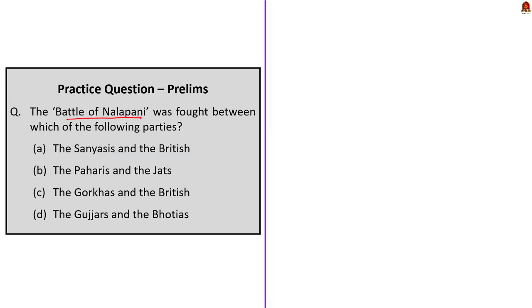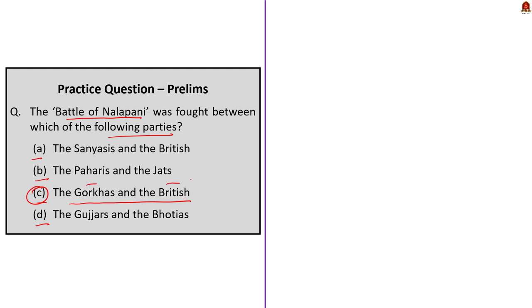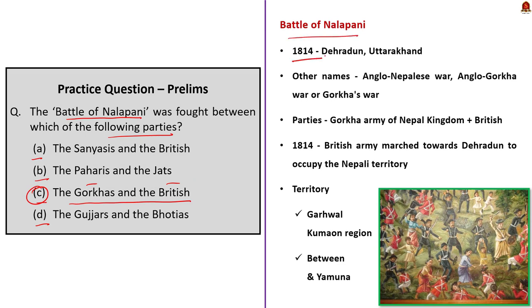The next question is about the Battle of Nalapani. We have to find the two parties involved. The correct answer is option C — the Gorkhas and the British. The Battle of Nalapani happened in 1814 in the outskirts of present-day Dehradun, Uttarakhand. It is also known as the Anglo-Nepali War, Anglo-Gorkha War or simply Gorkha War, as it was fought between the Gorkha Army of the Nepal Kingdom and the British.